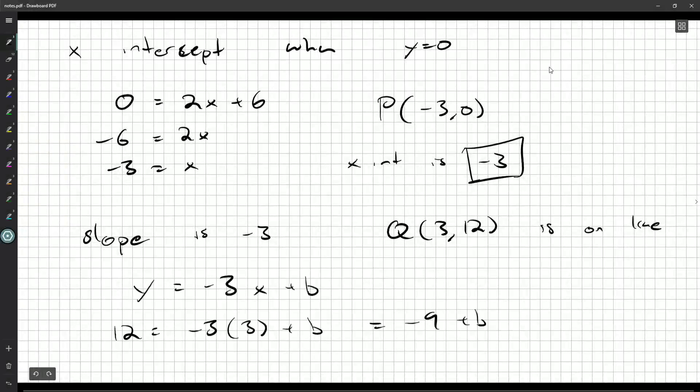That's negative nine plus b. Move the nine over to the other side. 12 plus nine is 21. So 21 is b. Our final answer is going to be y is negative 3x plus 21.